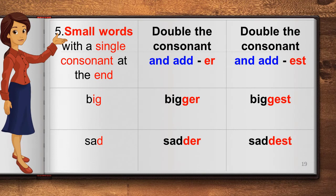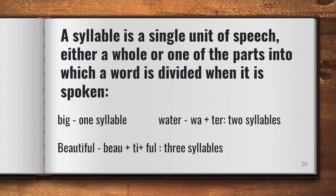Now we will look at small words with a single consonant at the end. In such cases, we double the consonant and add '-er' in comparative degree, and again double the consonant and add '-est' in superlative. For example, 'big' — ending with a consonant — becomes 'bigger' in comparative (we double the G) and 'biggest' in superlative. 'Sad' becomes 'sadder' and 'saddest.' So: positive is sad, comparative is sadder, superlative is saddest.